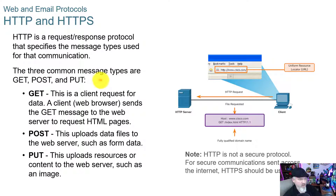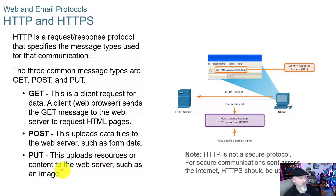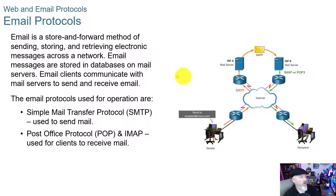HTTP is a request-response protocol that specifies the message types used for communication. The three common message types are GET, POST, and PUT. GET is a client request for data — a web browser sends a GET message to the web server. POST uploads data files to the web server, such as form data. PUT uploads resources or content to the web server, such as an image.